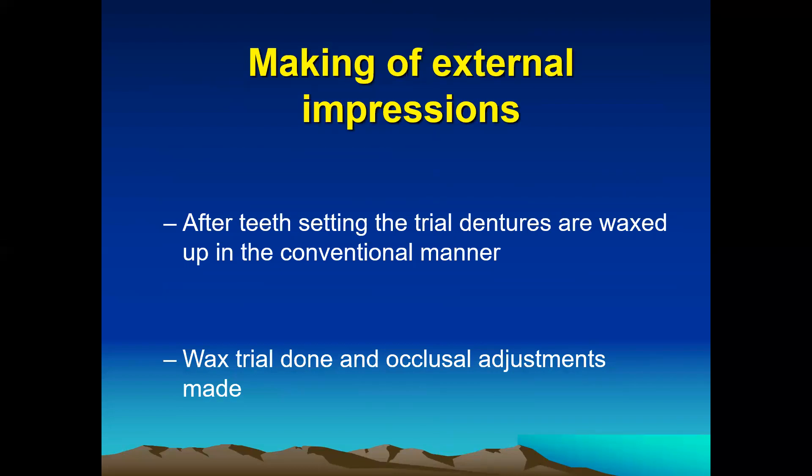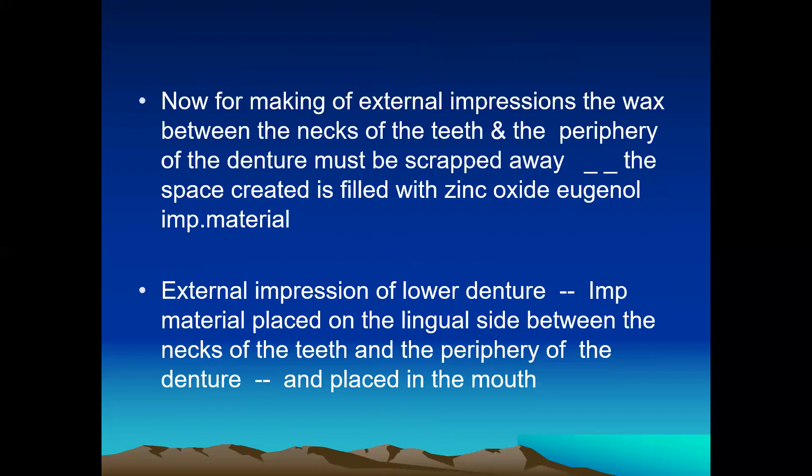One change in the neutral zone technique is that we also have to record the external impression. To do this, teeth setting is first done in the usual manner and after teeth setting the trial dentures are waxed up in the conventional manner. The wax trial is done and occlusal adjustments are made. For making the external impressions, the wax between the necks of the teeth and the periphery of the denture flange — that is, the wax between the artificial teeth and the denture flange — is removed. This space is filled with zinc oxide eugenol impression material.